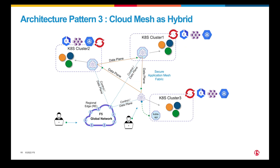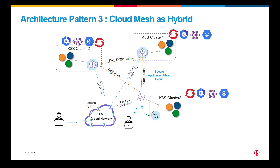What if you want the best of both patterns? With Architecture Pattern 3, you can deploy a hybrid pattern where Cloud Mesh runs a combination of pods and nodes. These architectures inherit the benefits of both Pattern 1 and Pattern 2. Regardless of which pattern you choose, F5 Distributed Cloud services such as web application and API protection, API discovery, bot defense, service discovery, and so on can be consumed regardless of the pattern deployed.